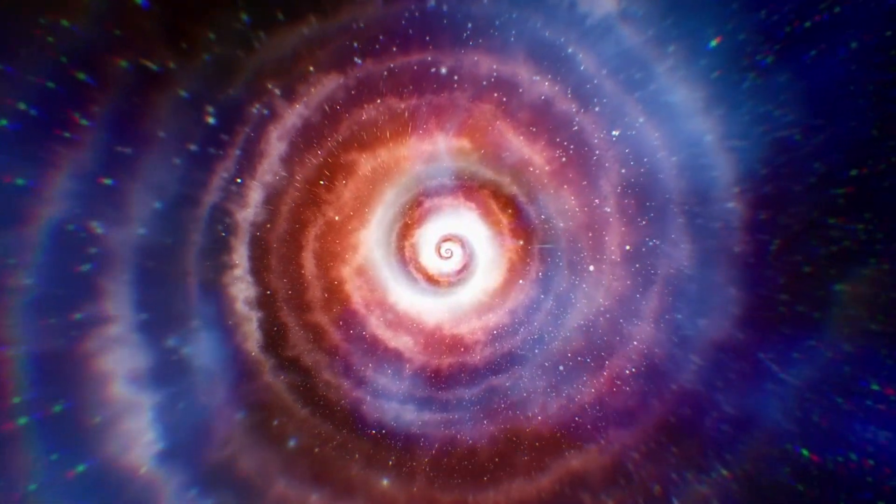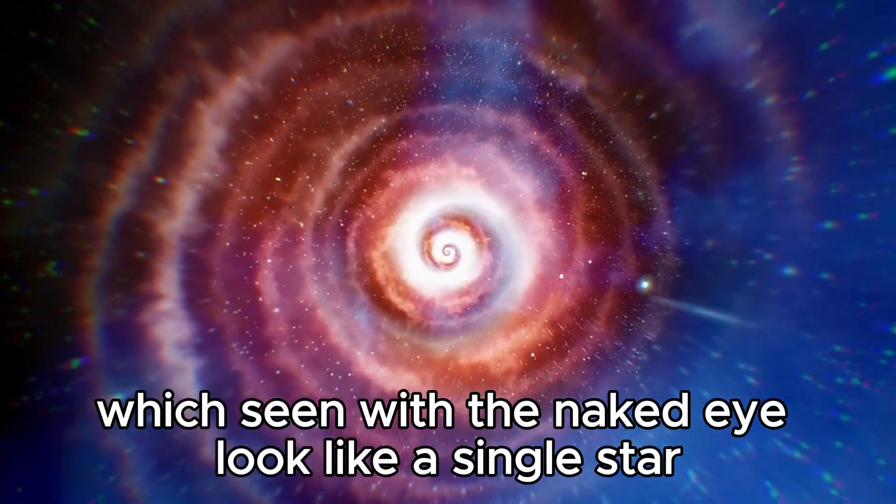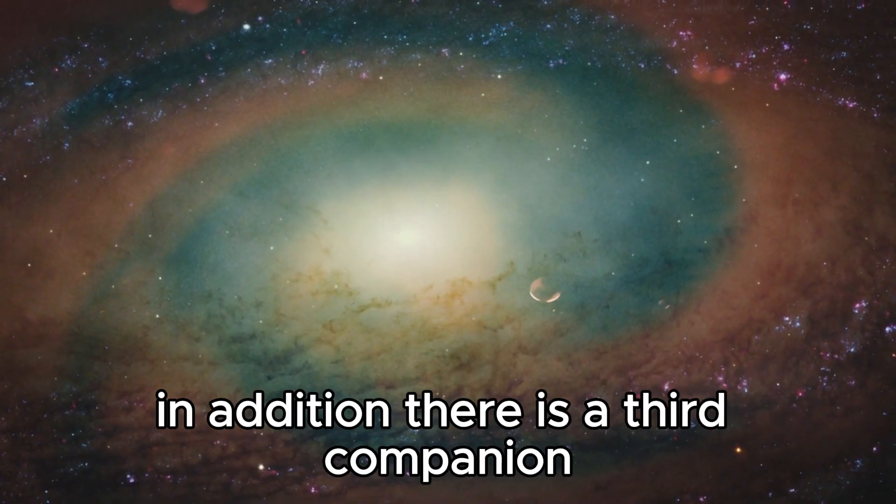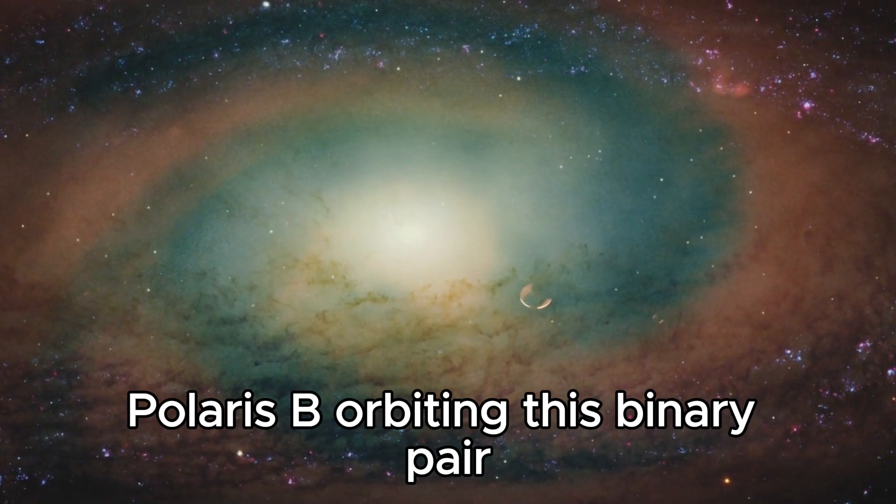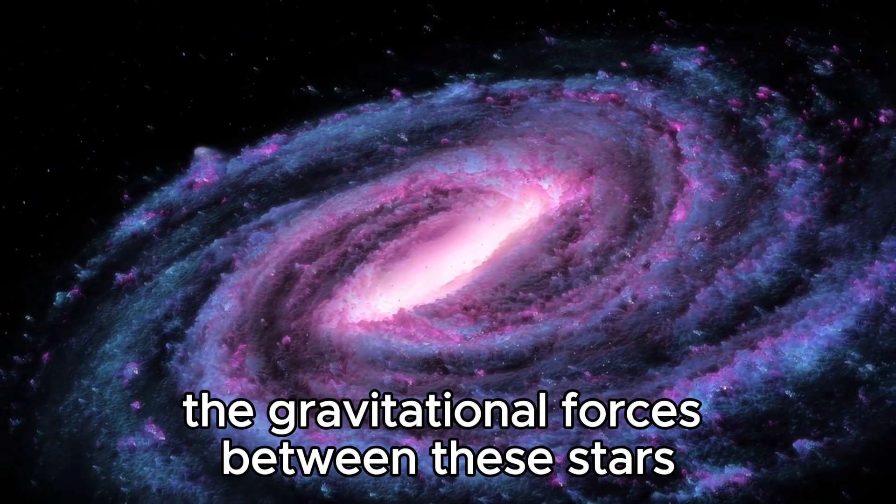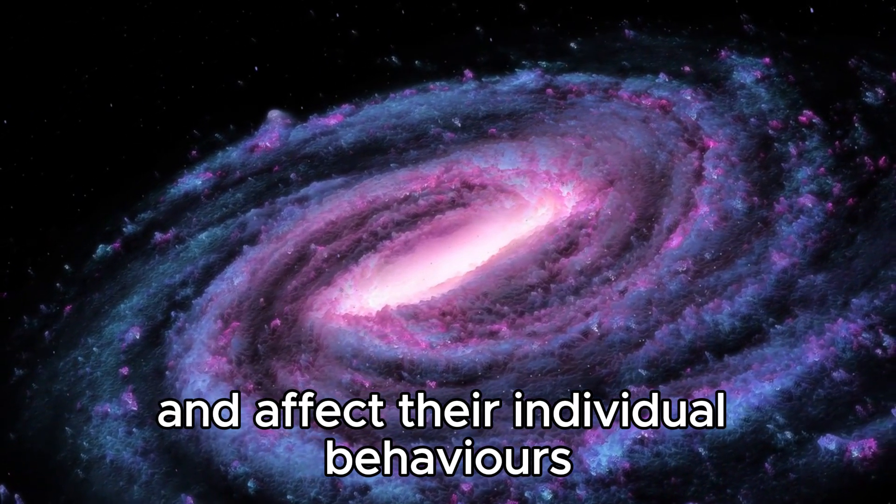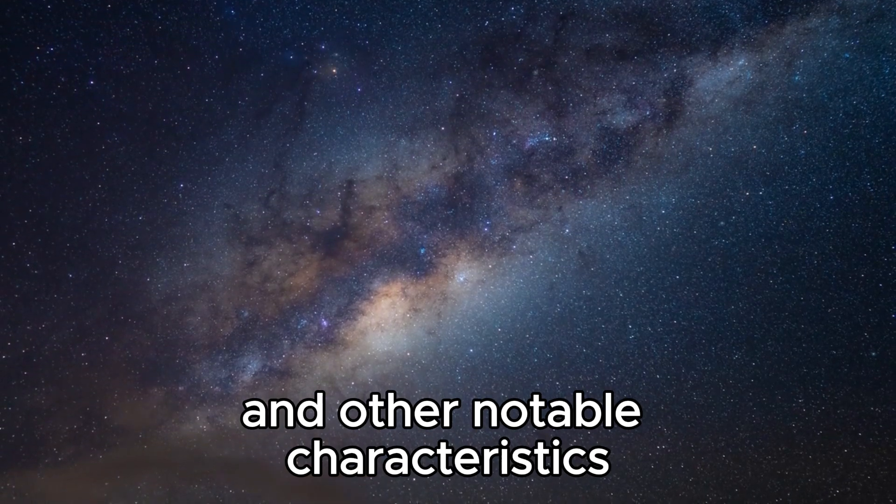Within this system, the primary stars are Polaris AA and Polaris AB, which, seen with the naked eye, look like a single star. In addition, there is a third companion, Polaris B, orbiting this binary pair. The gravitational forces between these stars shape their orbits and affect their individual behaviors, which has a direct impact on their brightness and other notable characteristics.